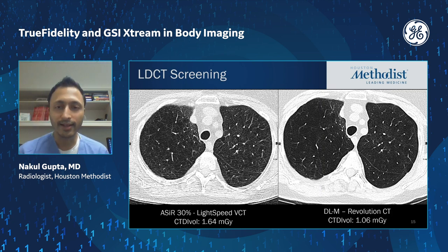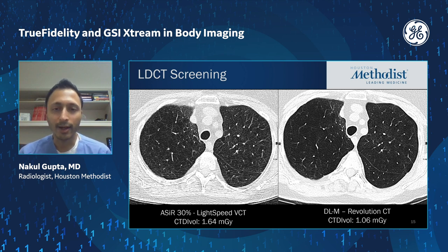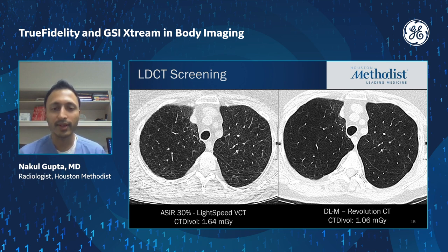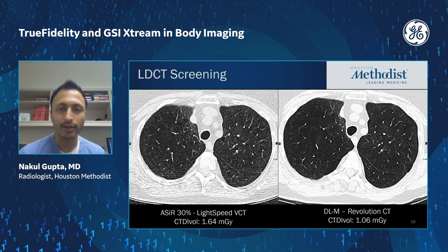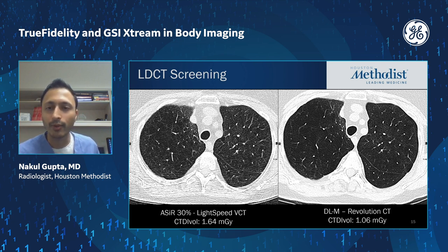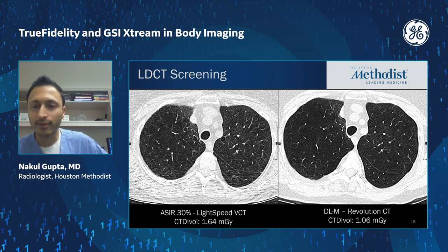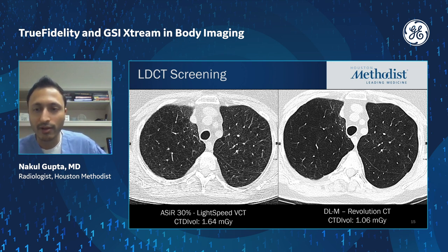Low dose lung screening is another area where we've implemented this with great effect. The previous scan done on a LightSpeed VCT at 1.6 mGy shows a lot of streak artifacts, particularly in the dependent portion of the lungs, and a fairly high noise level. Applying deep learning on that same patient with a CTDI of 1.06 — about two thirds of the previous dose — you get a much cleaner image, less noise, and the streak artifact is almost gone in the dependent portion of the lungs.